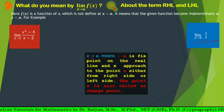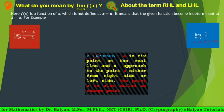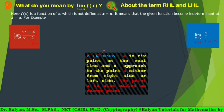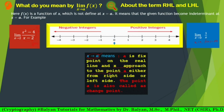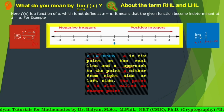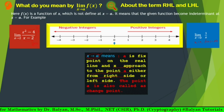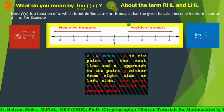X tends to a means a is a fixed point on the real line, and x approaches to the point a either from the right side or from the left side. The point a is also called a change point. In this case, this is x equal to 2 and this is x equal to 0.